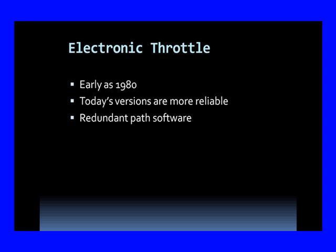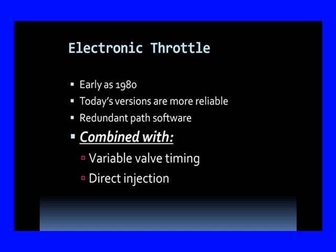We've had electronic throttle as far back as the 80s — it was a simple motor that moved the throttle shaft. It's been used widely on diesels, of course. Today's versions are much more reliable. They have a feature we're going to focus on constantly through this program called Redundant Path Software, where we look at two different situations and verify they're working properly. We're going to combine this with variable valve timing, direct injection, and electronic stability control, and talk about how these pieces come into play with electronic throttle.